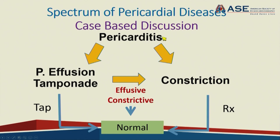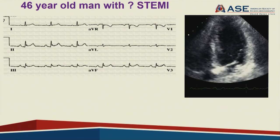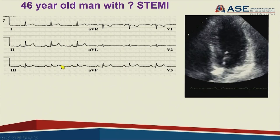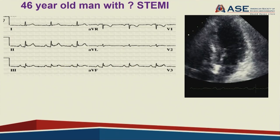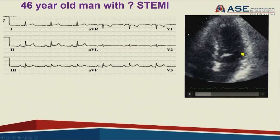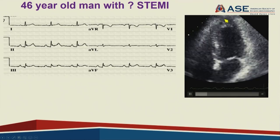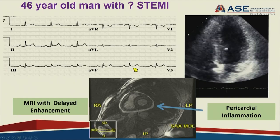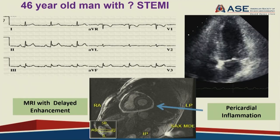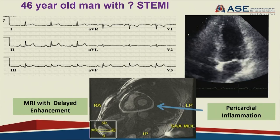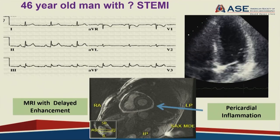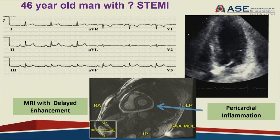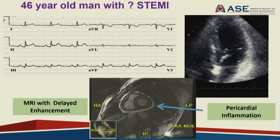Stages of pericardial disease can transition to other stages based on treatment or natural history. In the first case, a young individual with chest pain and ST elevation on ECG was thought to have STEMI and referred to the emergency department. But echocardiography was completely normal—no wall motion changes and no pericardial effusion. This indicated pericarditis, and cardiac MRI showed marked pericardial inflammation. Echocardiography can be normal in more than 50% of patients with acute pericarditis; cardiac MRI is the most sensitive marker.